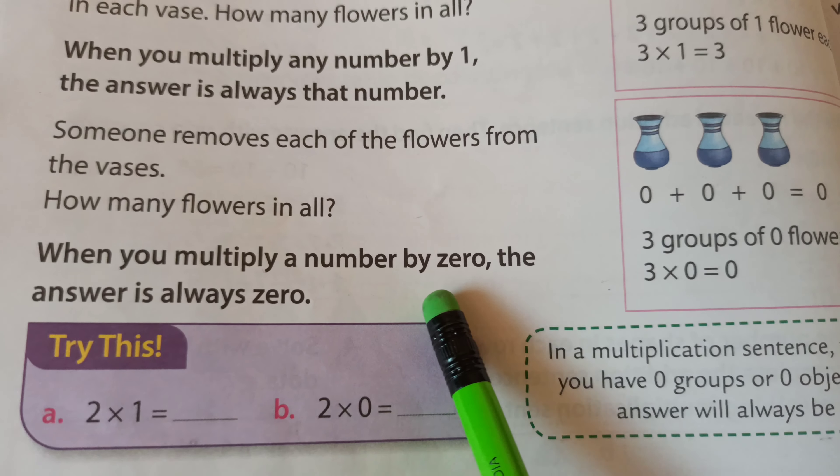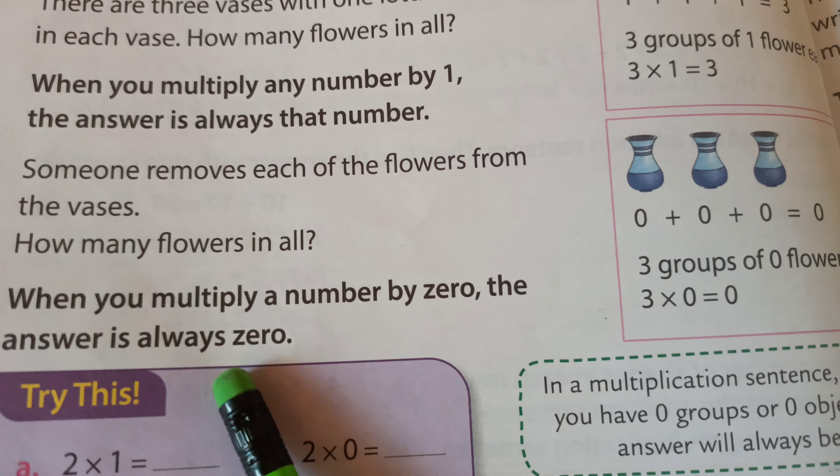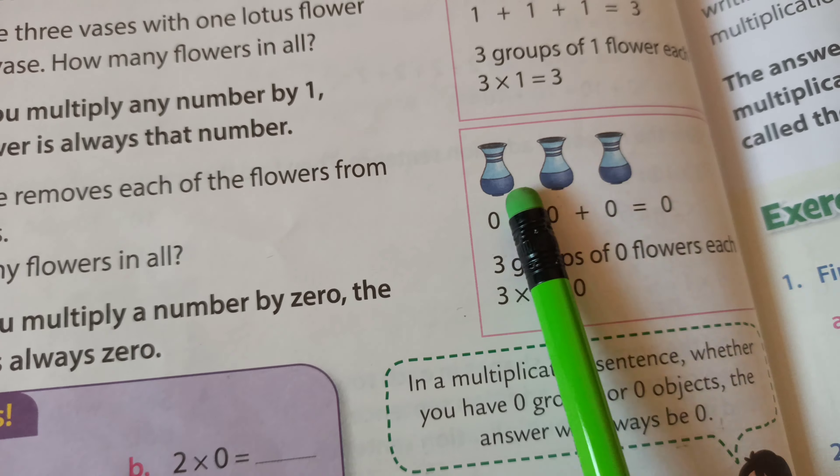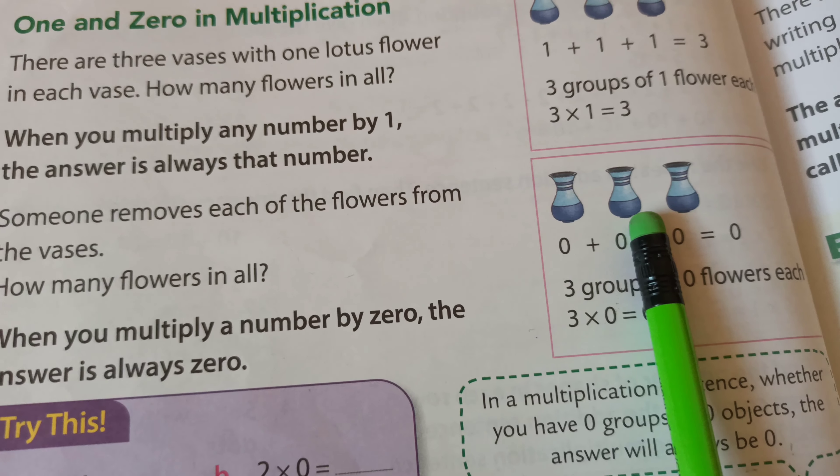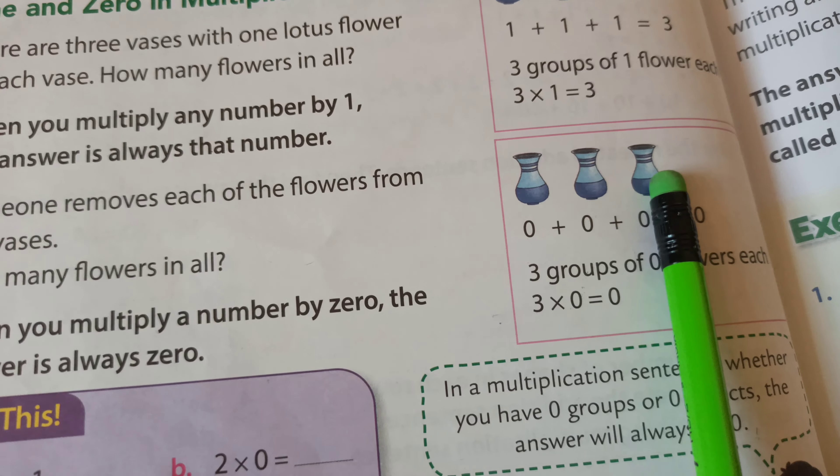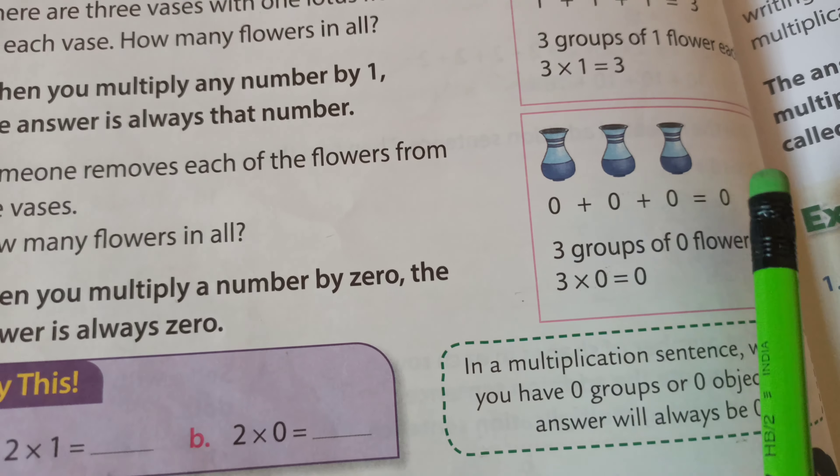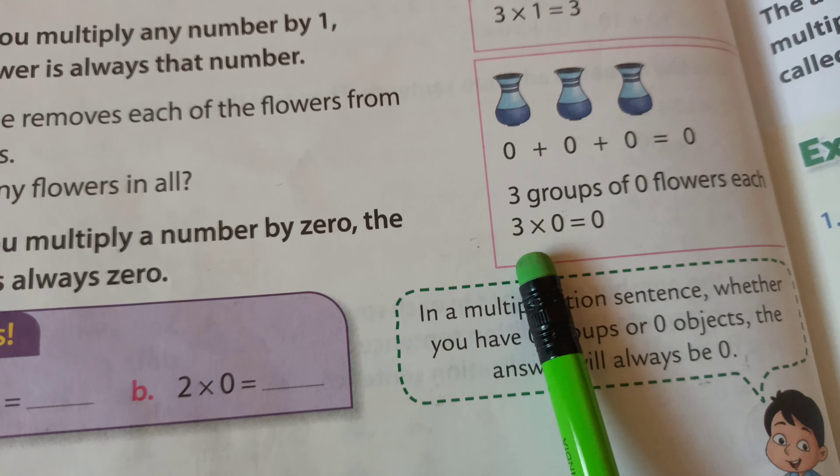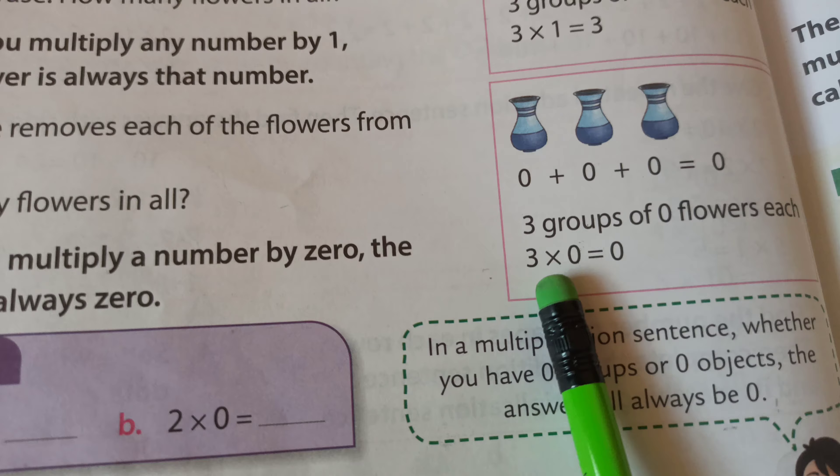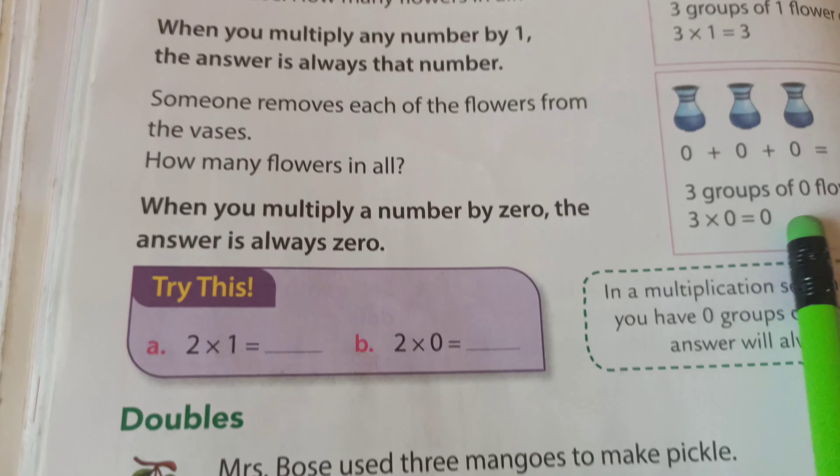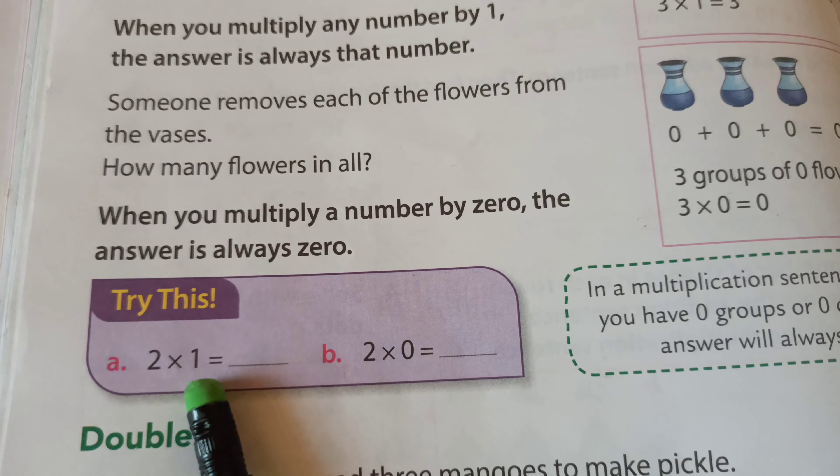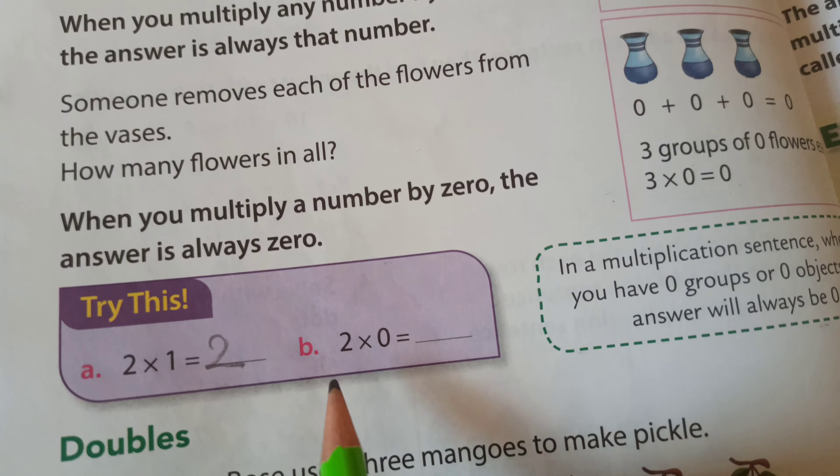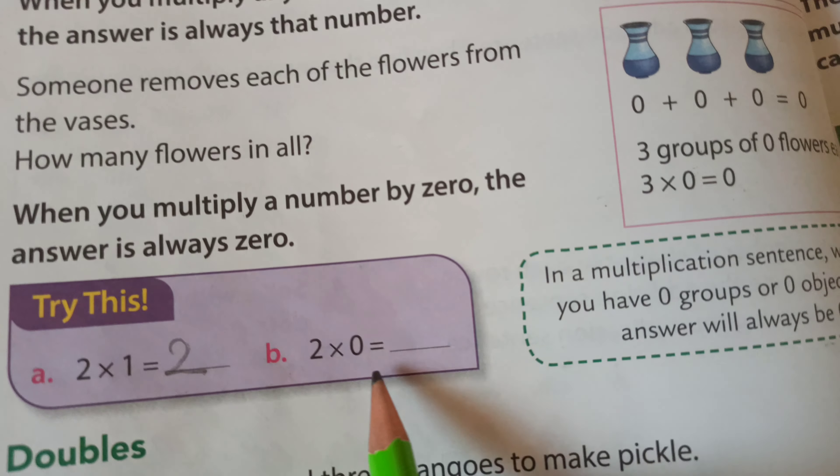How many flowers in all? See, 0 plus 0 plus 0. Zero means nothing, so 0 plus 0 plus 0 equals 0. This means when you multiply a number by 0, the answer is always 0. See here, 3 groups of 0 flowers each. 3 multiplied by 0 equals 0.